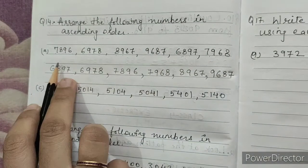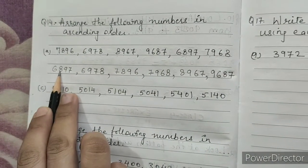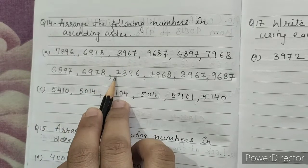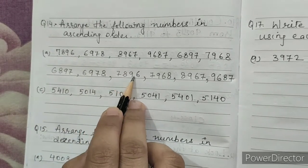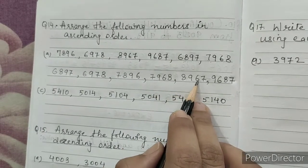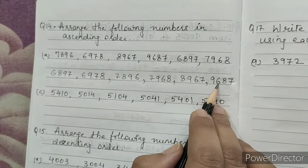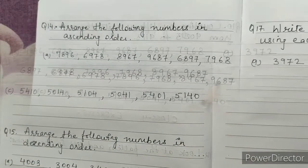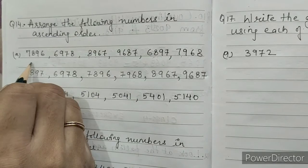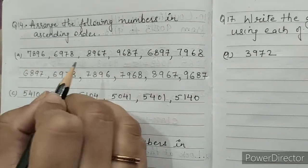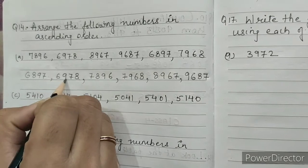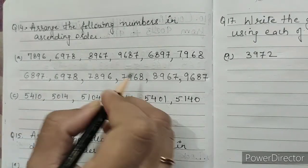So the ascending order is: 6897, 6978, 7896, 7968, 8967, 8976, 9678. We can put commas between the numbers or use less than signs to show the order.